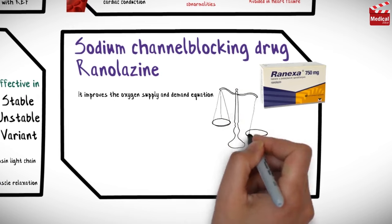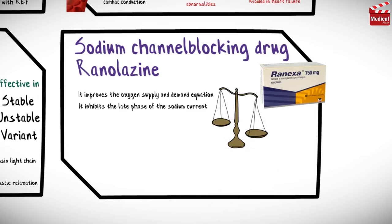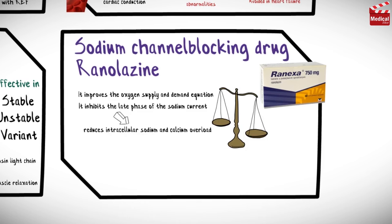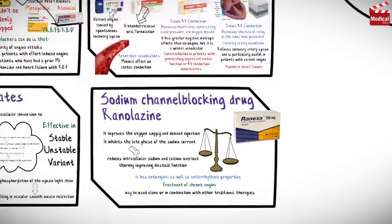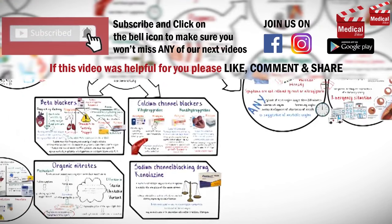Finally, the sodium channel blocker ranolazine improves the oxygen supply and demand equation. It inhibits the late phase of the sodium current, reducing intracellular sodium and calcium overload, thereby improving diastolic function. Ranolazine is indicated for the treatment of chronic angina and also has antiarrhythmic properties; it may be used alone or in combination with other traditional therapies. That concludes this lecture; the next lecture will discuss blood disorders, anticoagulants, and antiplatelet agents.